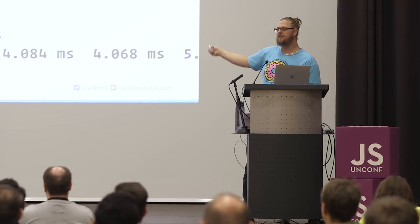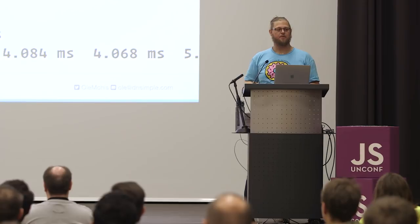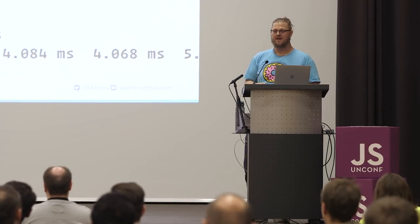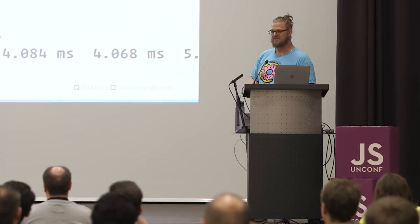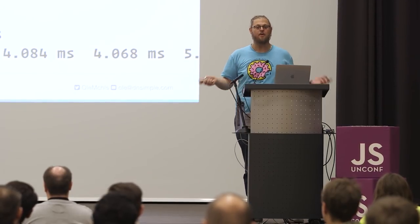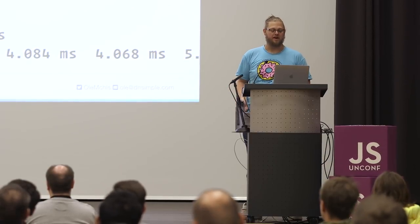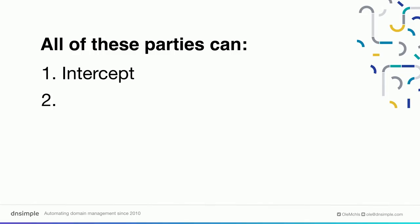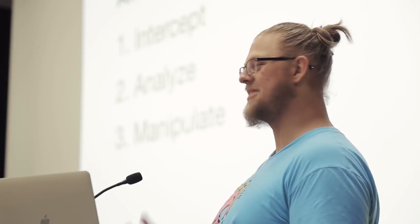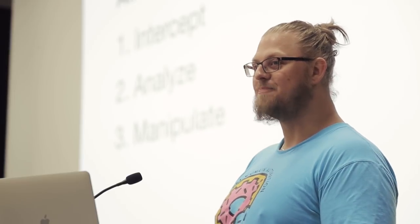And this is a relatively short route. If you do this in a bigger network or in a hotel, this list can grow to 10 to 20 entries — it can grow basically unlimited. And all of these parties that are handling your UDP packets can intercept, analyze, and manipulate your DNS traffic. You don't know if the answer you receive is what the resolver would want to send back. You don't even know if the resolver was actually the one sending it back — you can spoof IP addresses. So there's basically no guard in place against anyone tampering with your DNS.